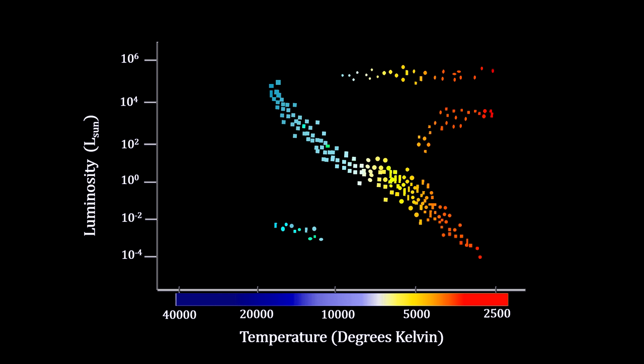Here we see that most stars fall on the diagonal line, from the upper left—hot, blue, luminous stars—down to the lower right—cooler, dimmer, red stars. But there is also a grouping of stars well below the main line, and two groupings of stars well above the main line.